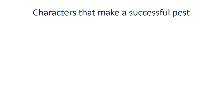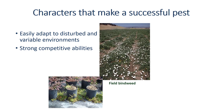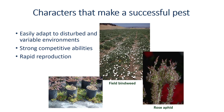There are several characteristics that make a successful pest. First, the pest can easily adapt to disturbed and variable environments. You can see this with weeds — this field bindweed is rapidly invading this field. The pest must have strong competitive abilities. In this nursery, weeds are actually growing on top of the ground cloth and have displaced the nursery plant in the pot. A successful pest has rapid reproduction — aphids such as these rose aphids can produce as many as 12 live young a day without mating.